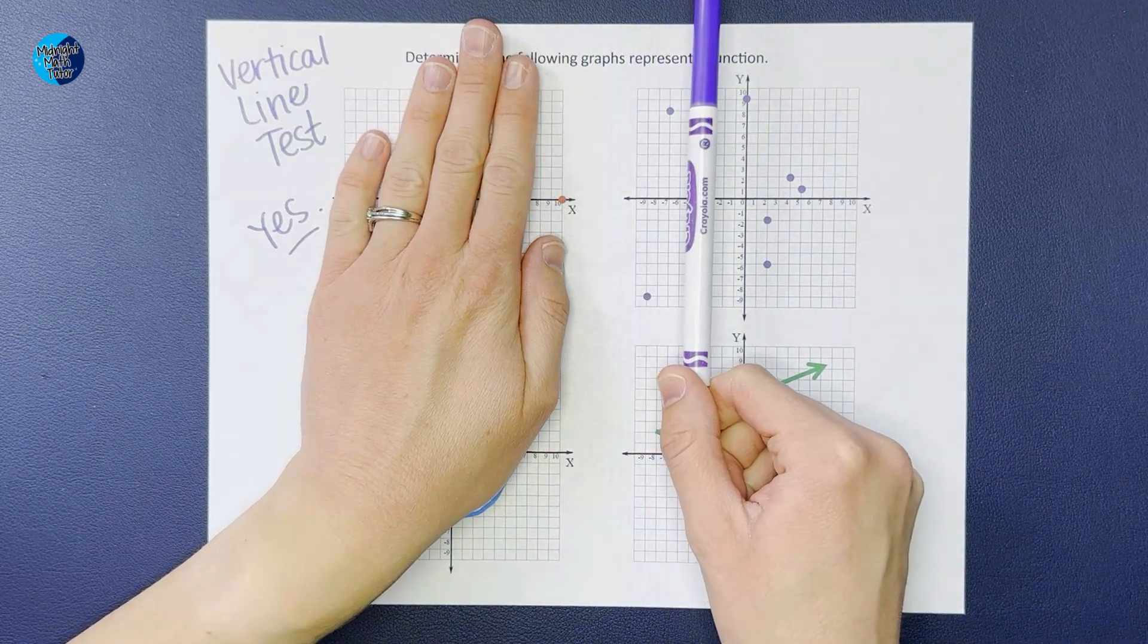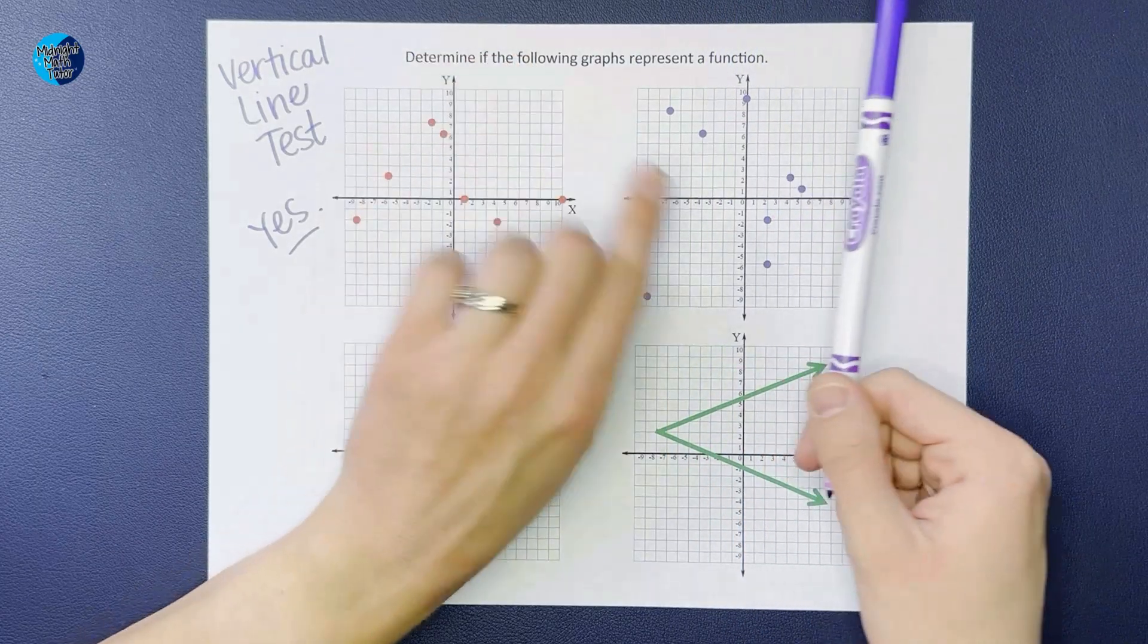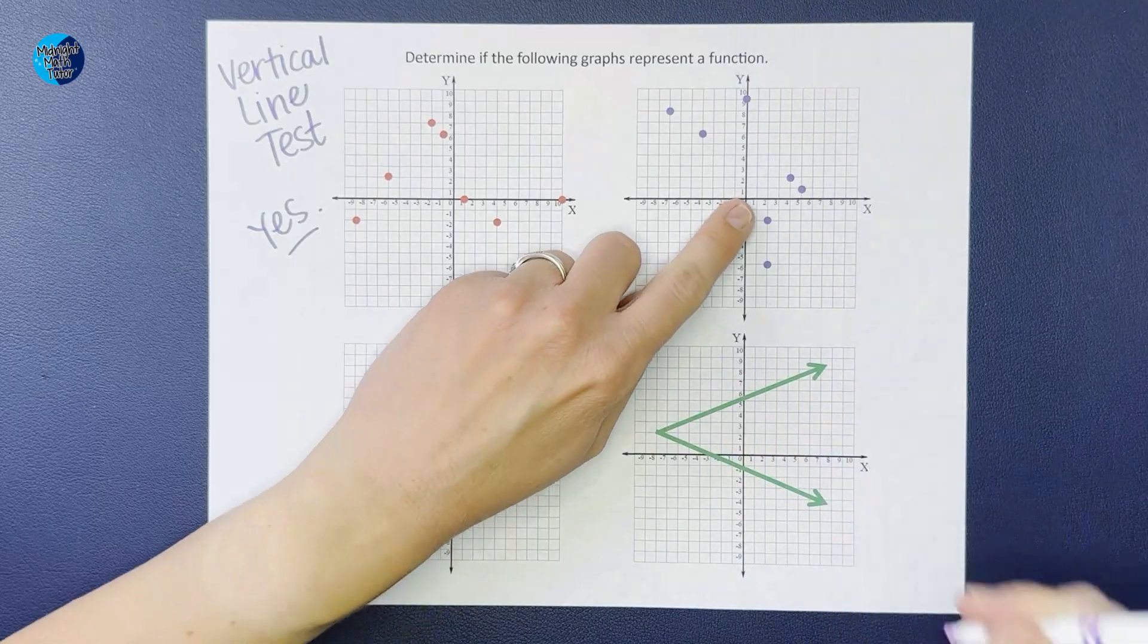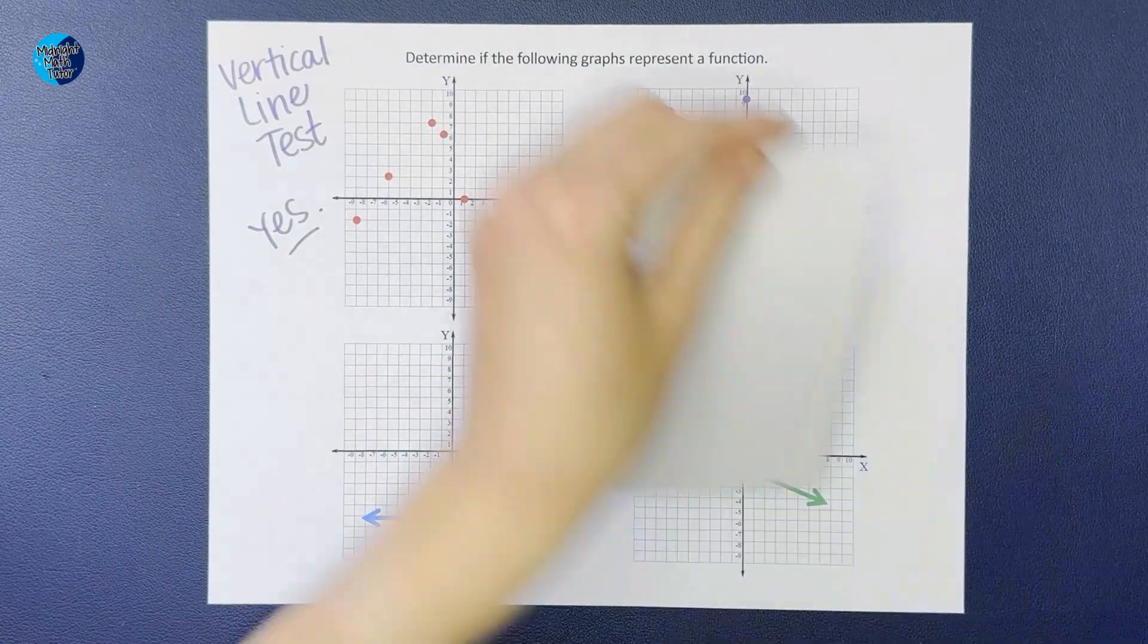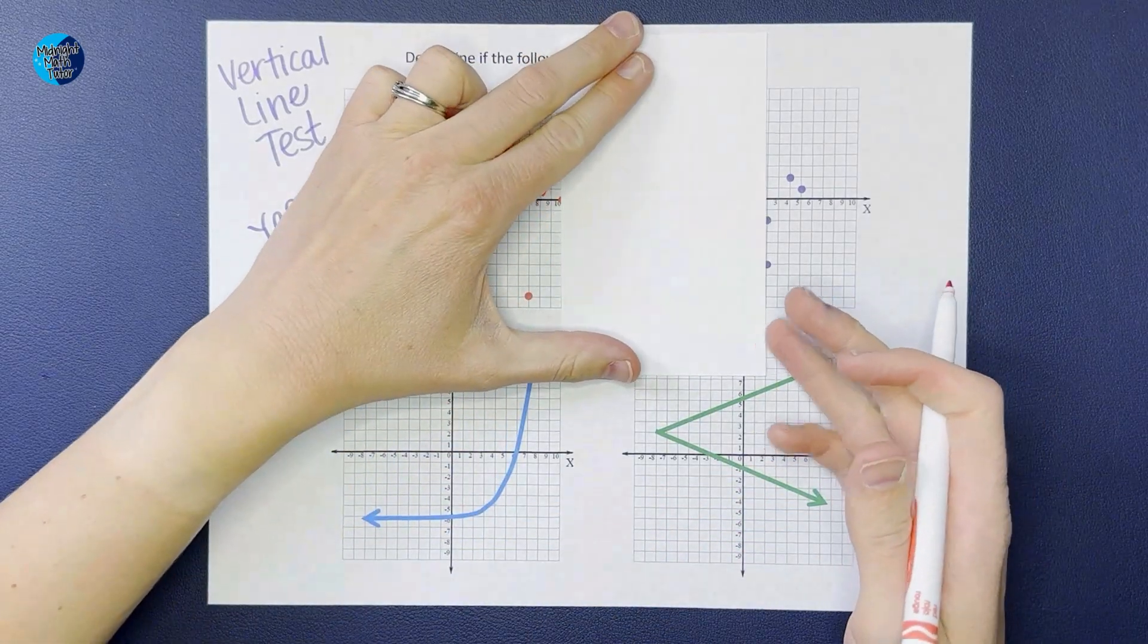So on this purple one over here, if I do my vertical line test and I go like this - oh right there, it might be covered on the camera but you can see that right there I hit two points at once. Like I said, some people like to actually draw right on their graph.